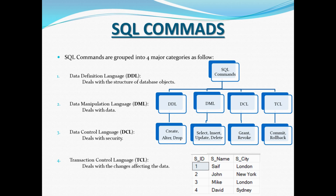The second category is DML, which stands for Data Manipulation Language. This deals with data. When working with table data — reading, adding, modifying, or deleting data — you use DML commands. To view data use SELECT, to add data use INSERT, to modify existing data use UPDATE, and to delete a row use DELETE. DDL deals with structure, whereas DML deals with data.